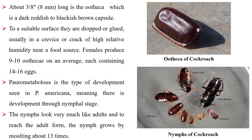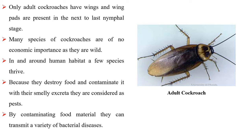Paurometabolus is the type of development seen in Periplaneta americana, meaning there is development through the nymphal stage. The nymphs look very much like adults and to reach the adult form, the nymph grows by moulting about 13 times. Only adult cockroaches have wings and wing pads are present in the next-to-last nymphal stage.